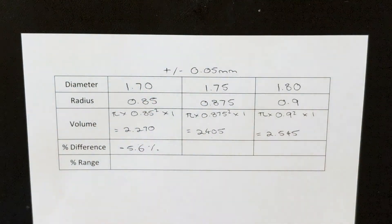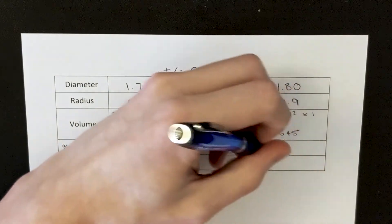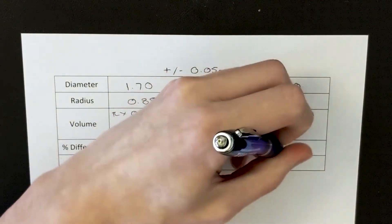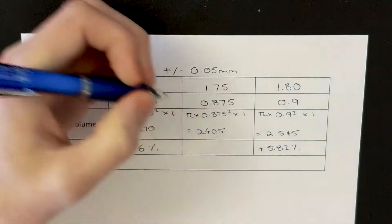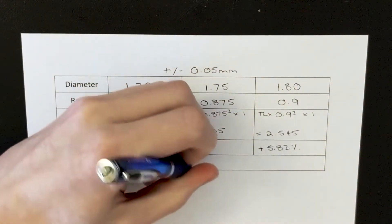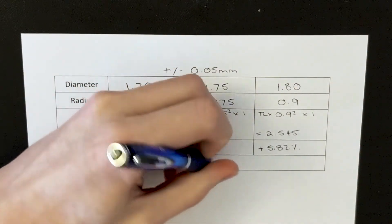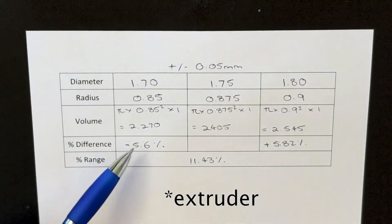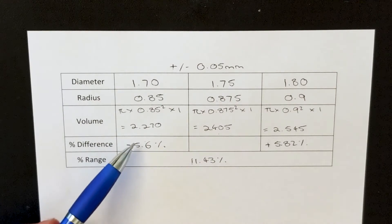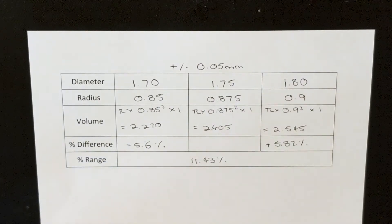And similarly for the 1.8mm filament, it's actually 5.82% more. And that totals to a percentage range of 11.43%. So that's how far off you could be if you've calibrated your filament to, for example, a 1.7mm filament, and then you put in a 1.8mm filament.